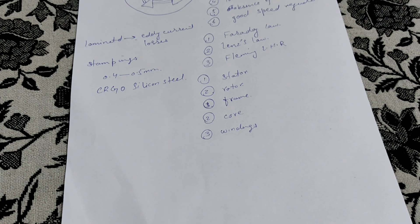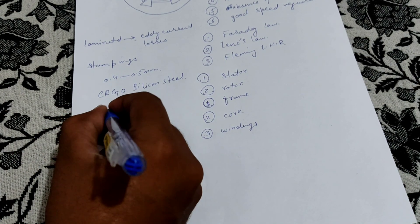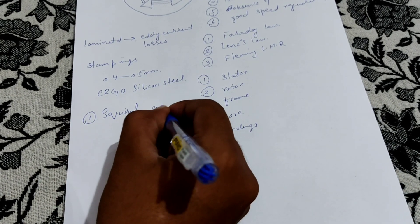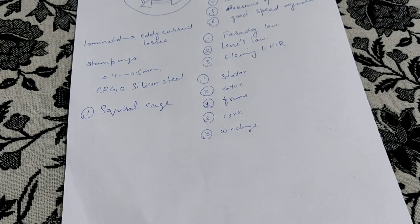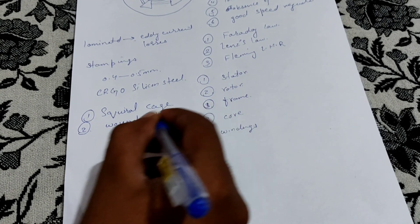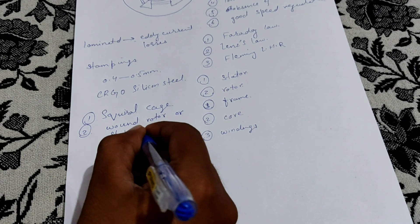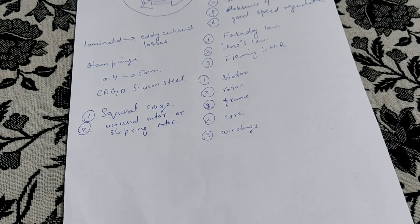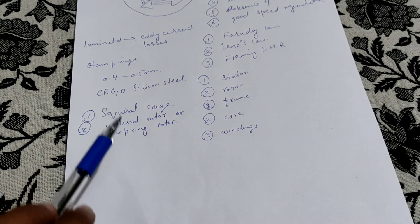Now coming to the rotor — the rotor can be divided into two types: number one is the squirrel cage type rotor, and number two is the wound rotor or slip ring rotor. Based on these types of rotor, we have two types of induction motors: squirrel cage and wound rotor.